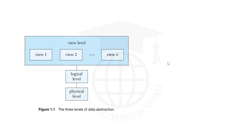Data abstraction in the case of database management system — we already know about database management system. The database system is the combination of database and database management system. It is a collection of interrelated data and a set of programs that allow users to access and modify the data. The main purpose of the database system is to provide users with an abstract view of data.